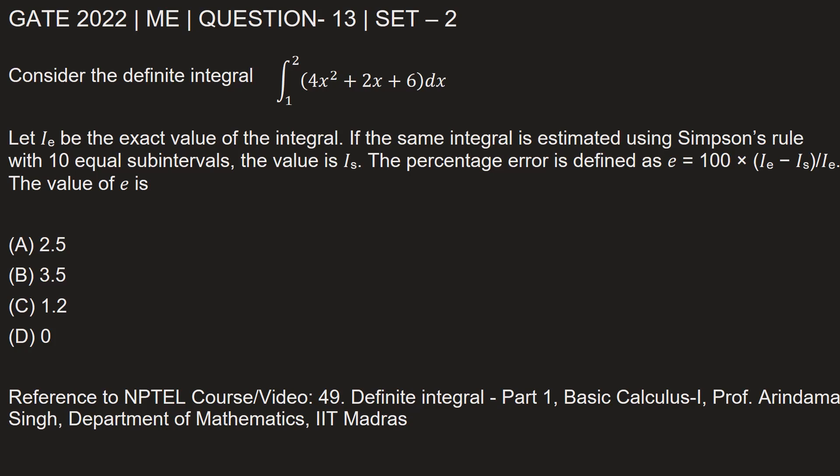Let I_E be the exact value of the integral. If the same integral is estimated using Simpson's rule with 10 equal sub-intervals, the value is I_S. The percentage error is defined as e = 100 × (I_E - I_S)/I_E. The value of e is?